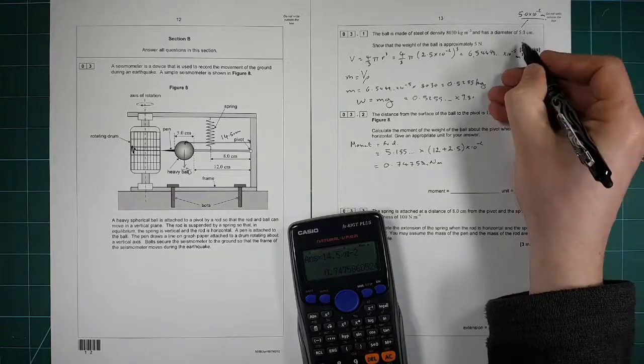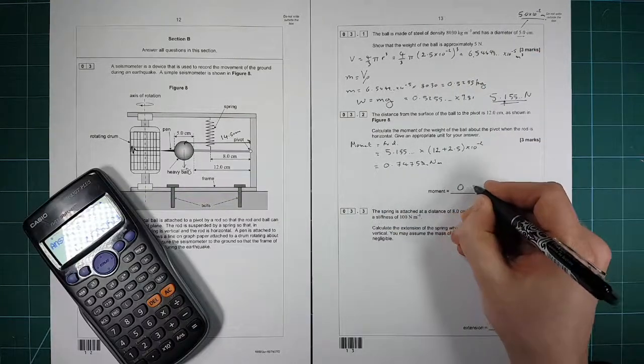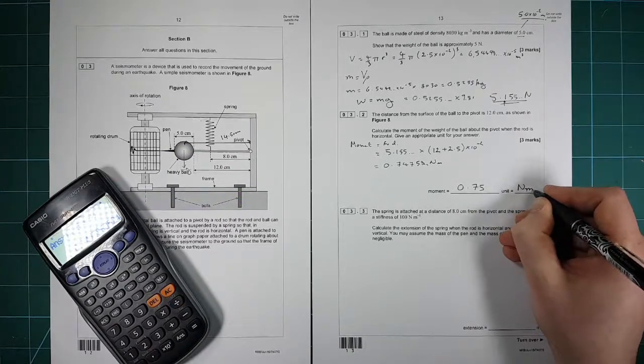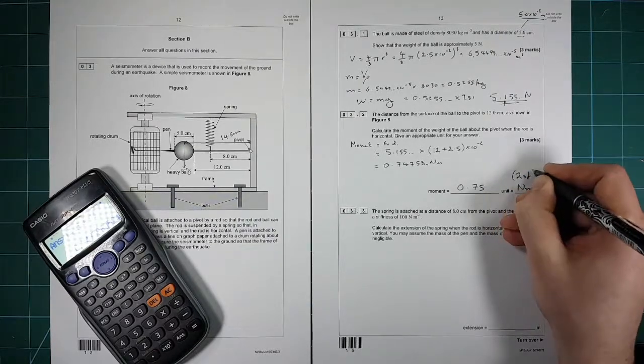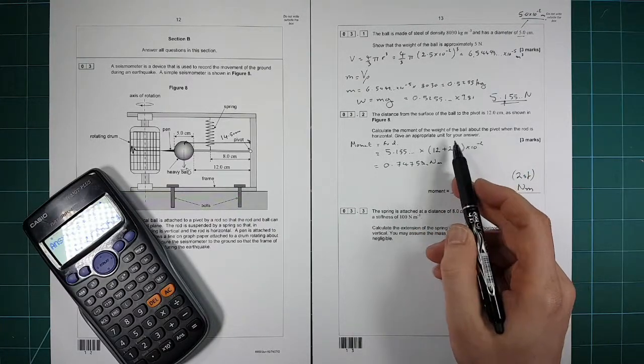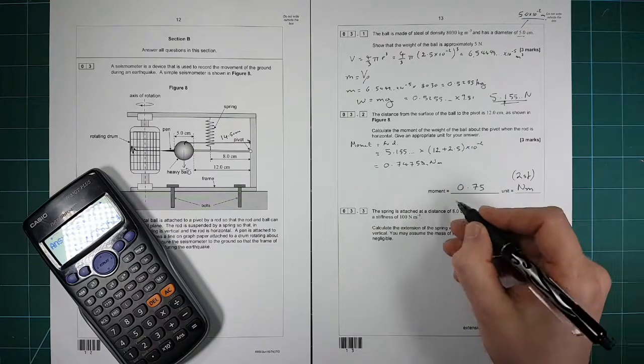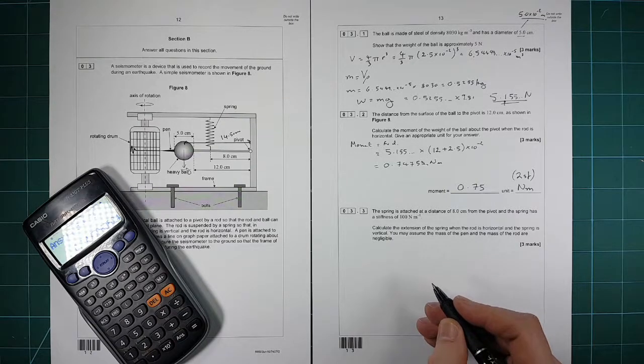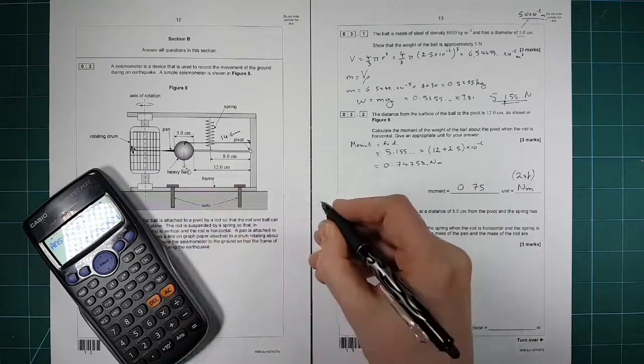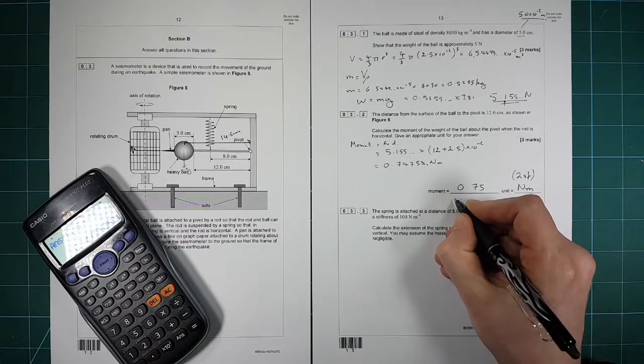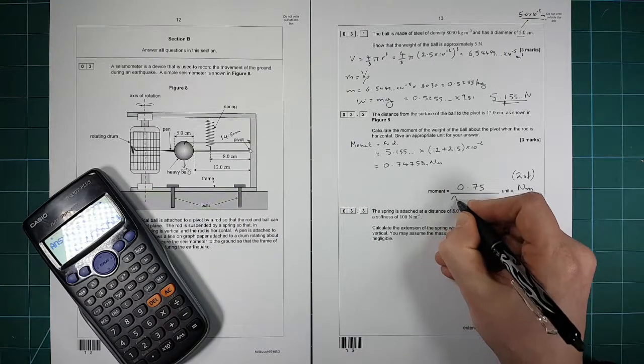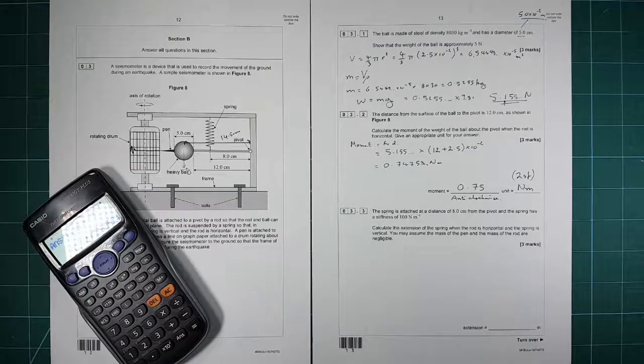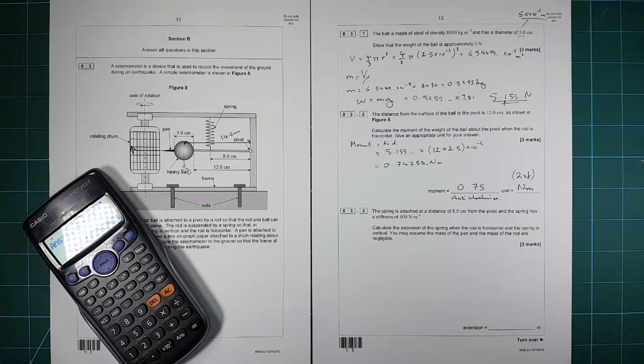That gives us 0.74758 newton meters dot dot dot. So we should do it to 2 sig figs: 0.75, the unit is newton meters, and that's 2 sig figs. And although it's unnecessary in this question and they don't give credit for it, I would always put the direction of the moment because it is a vector, so I would put anti-clockwise here to show that you understand that moments have direction.